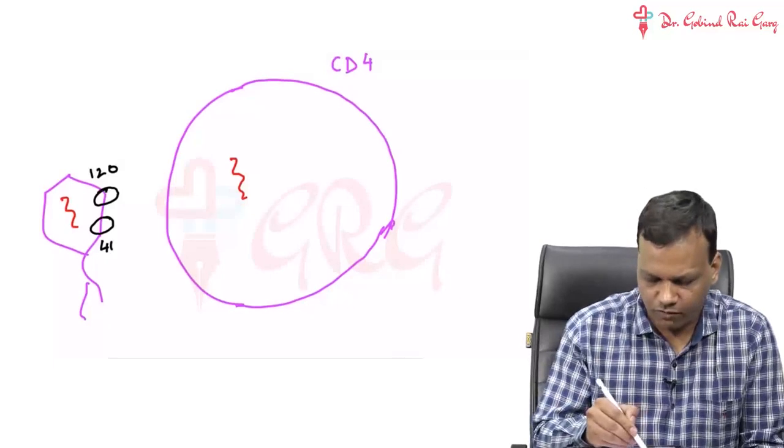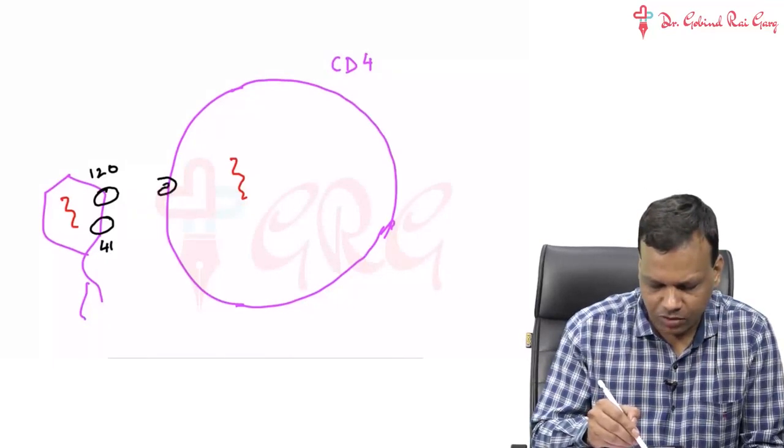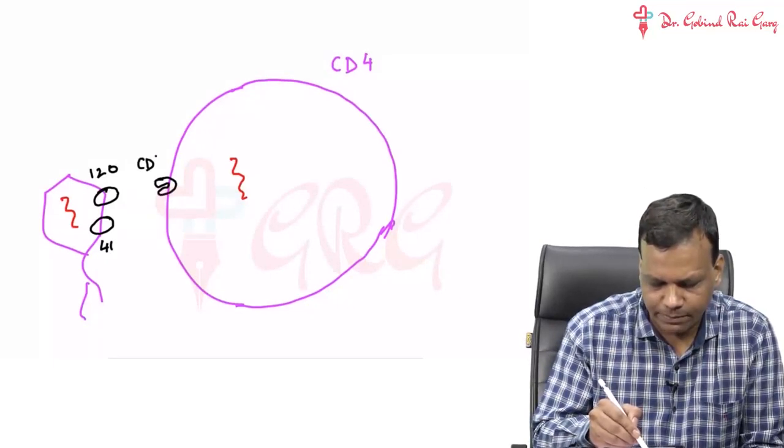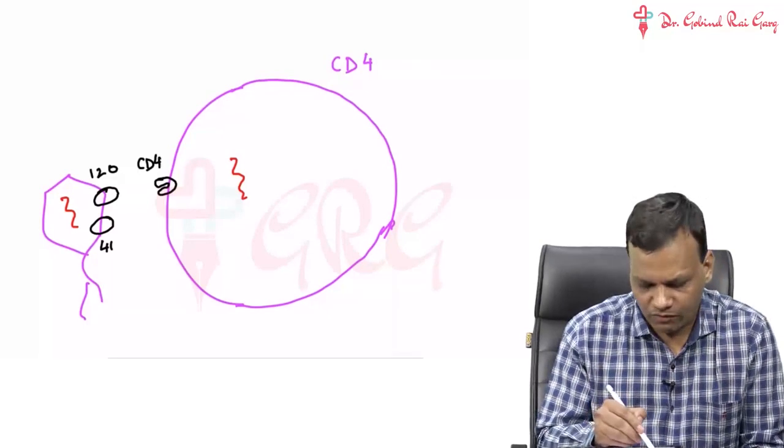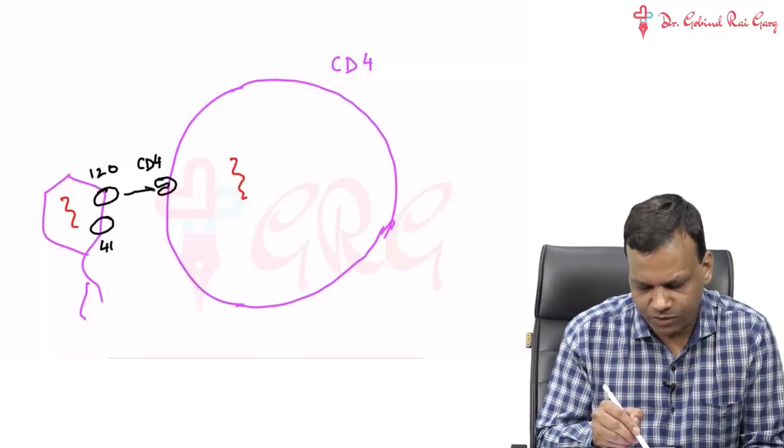What happens? First of all, the receptor present on the CD4 cell is CD4 receptors. So glycoprotein 120 binds to this CD4 receptor.